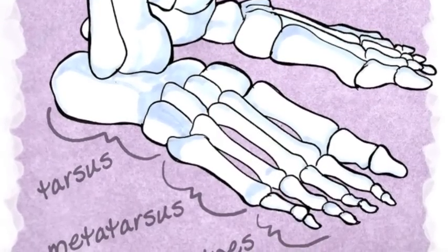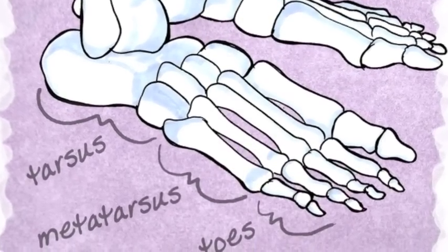There are three groups of foot bones, that's how it goes. The tarsus, metatarsus, and let's not forget toes.